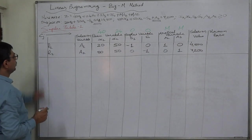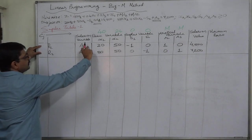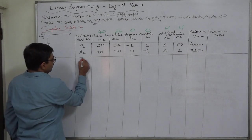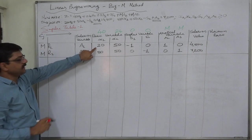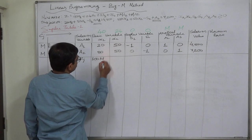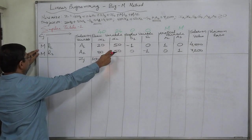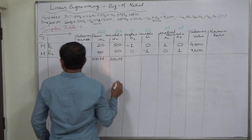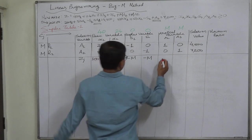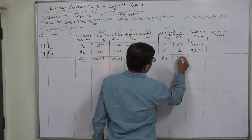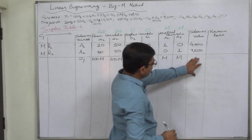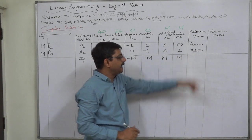To get the zj values, we first write the cj values of the solution variables in the first column. Since a1 and a2 are the solution variables, their cj values are both M. Now we compute zj values: M×20 + M×80 = 100M; M×50 + M×50 = 100M; M×(−1) + M×0 = −M; M×0 + M×(−1) = −M; M×1 + M×0 = M; M×0 + M×1 = M.